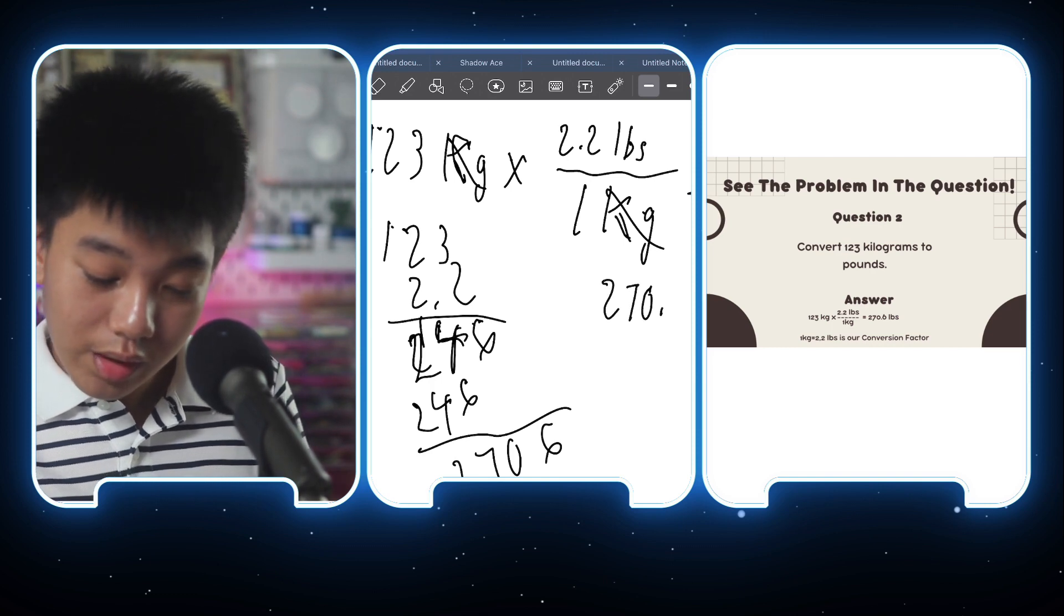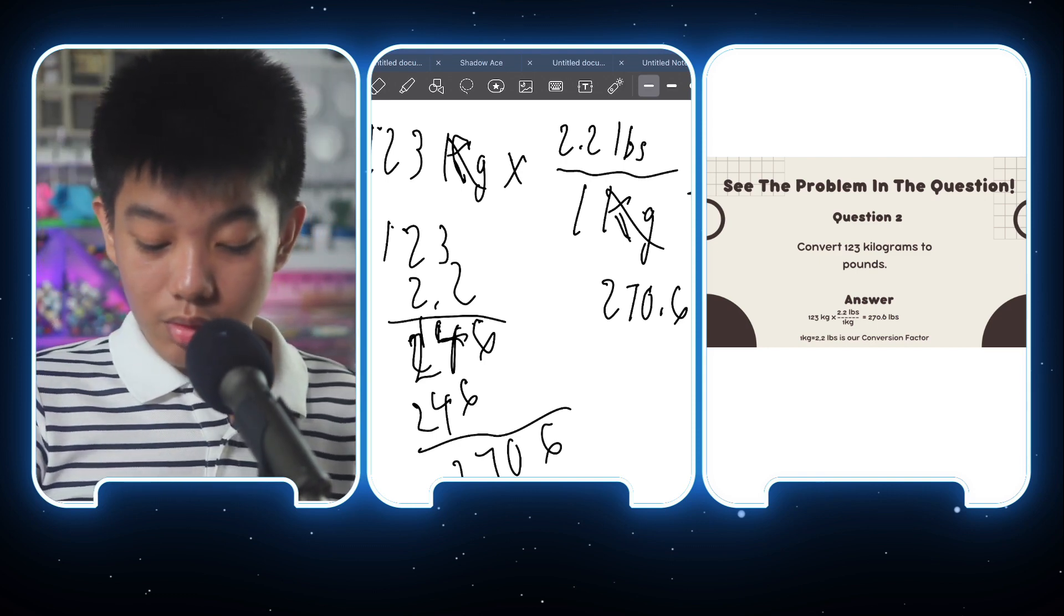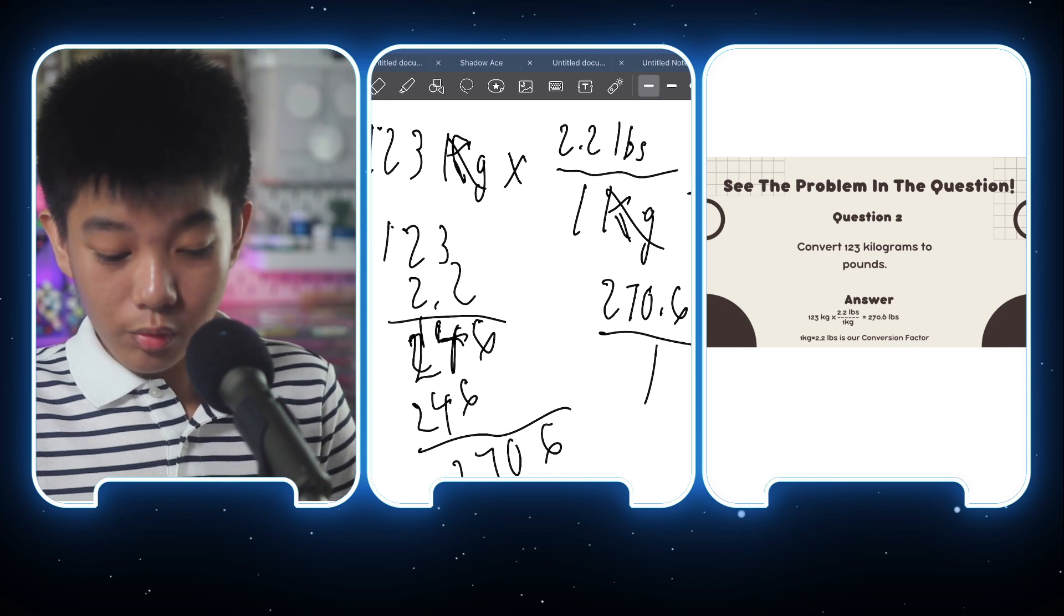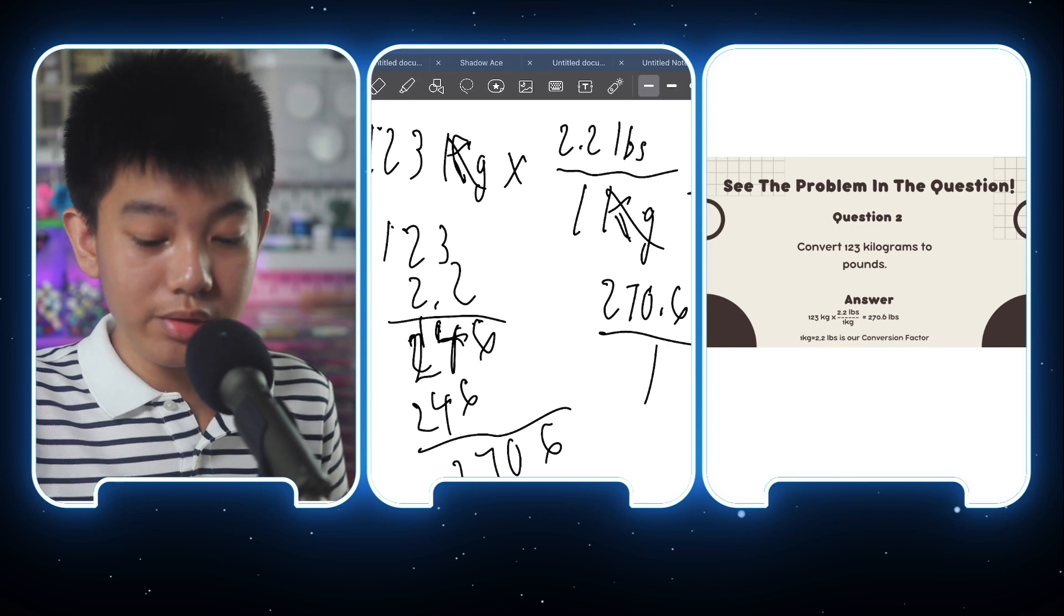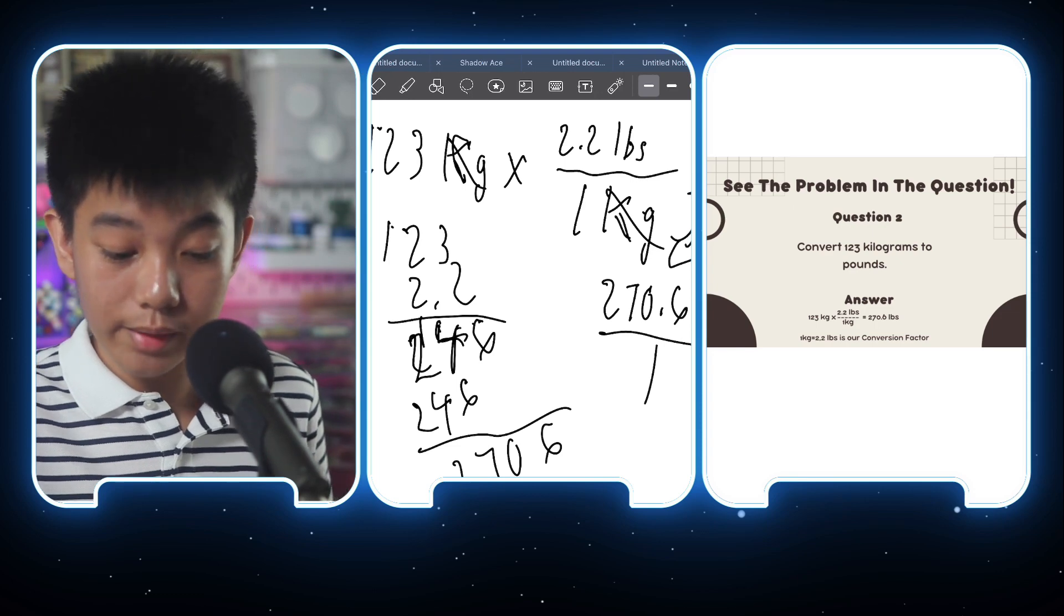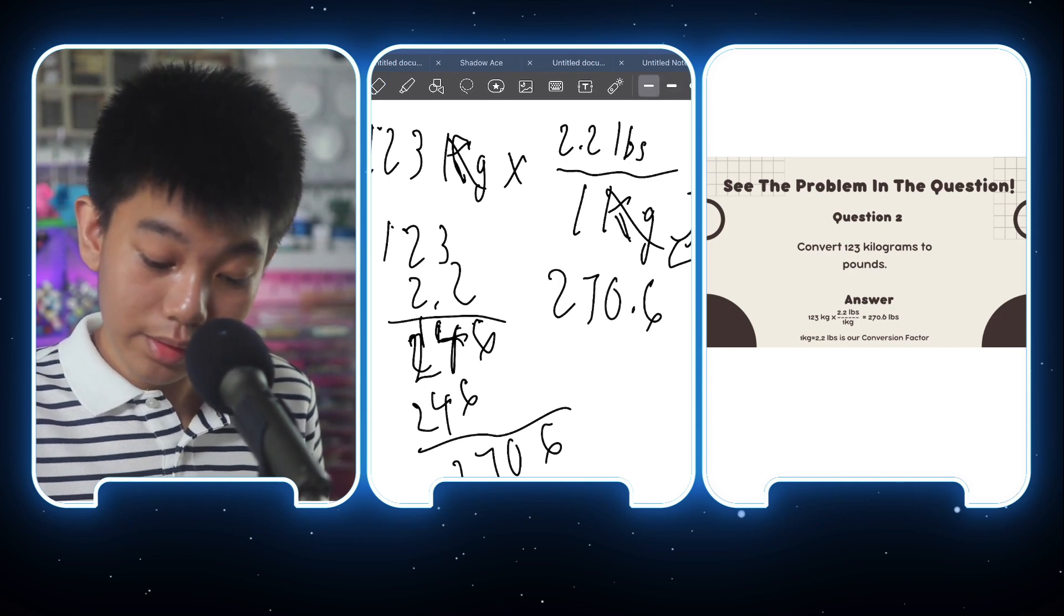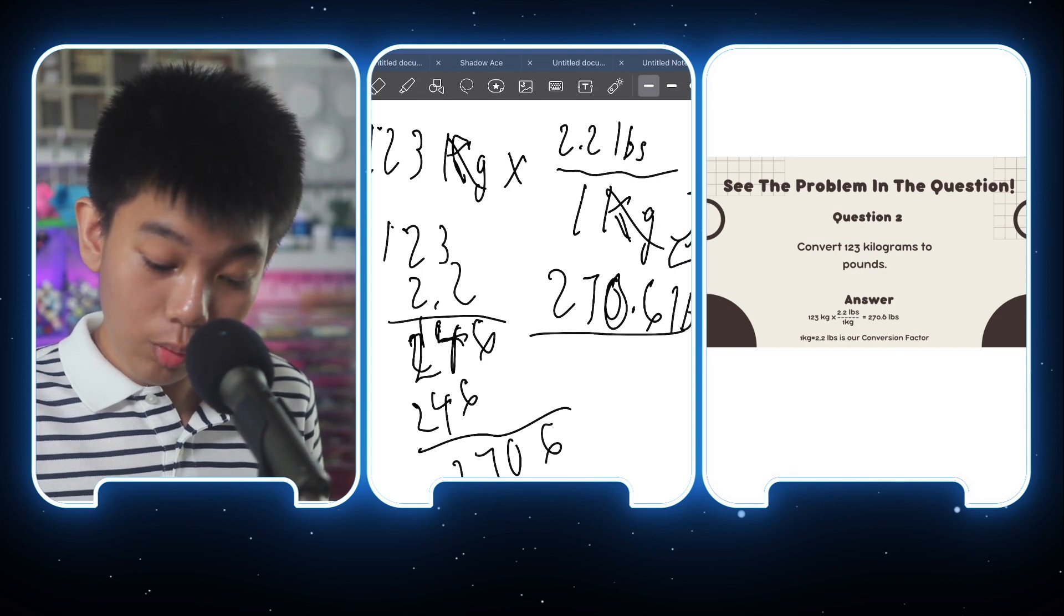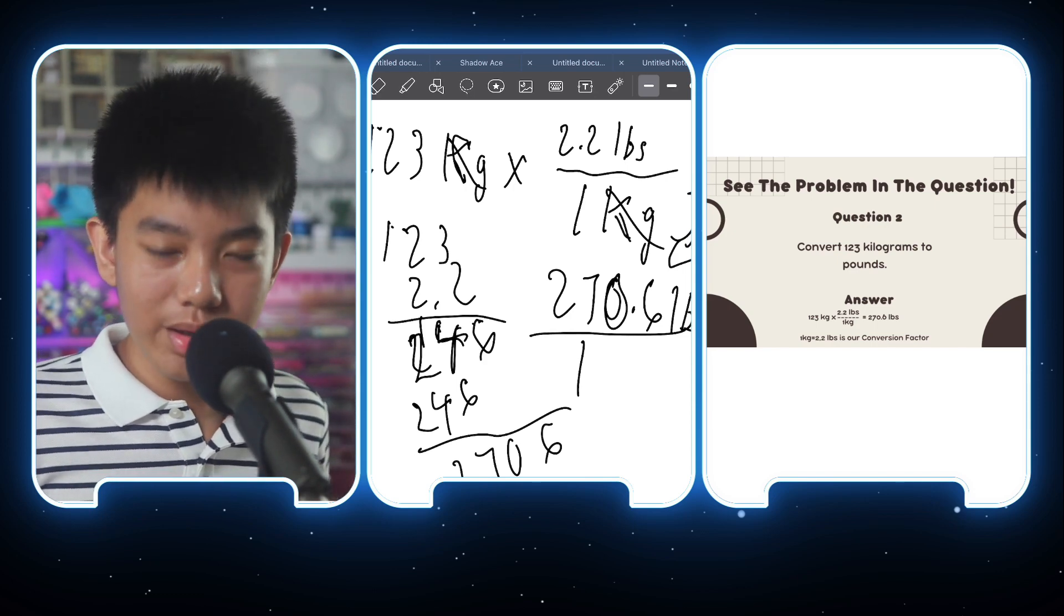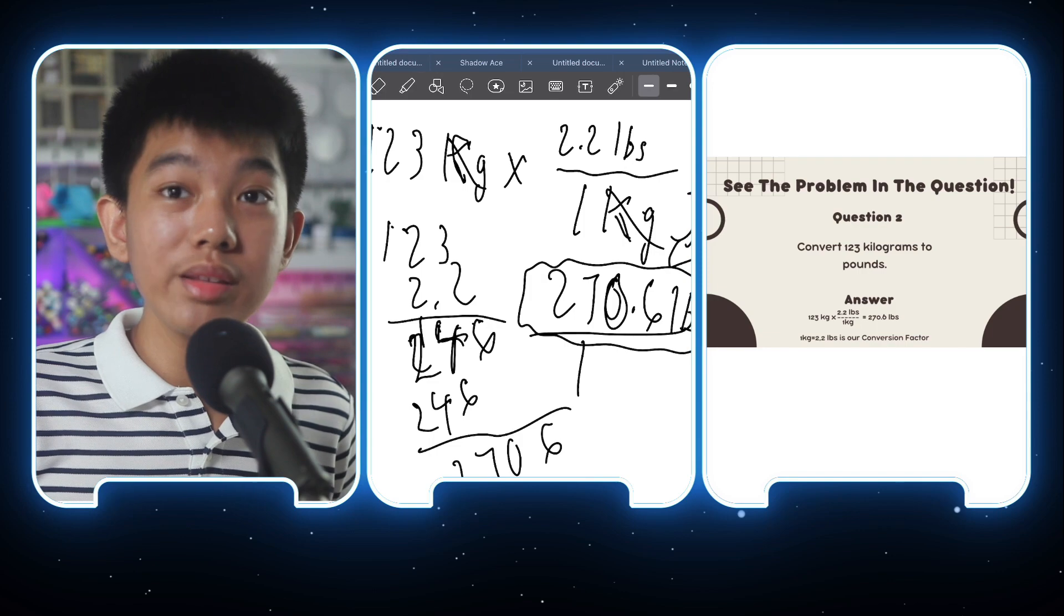270.6 pounds over one. So when you multiply 123 by the 2.2, this equals 270.6 pounds over one. And we won't need to divide 270.6 by one, because any number divided by one is itself. So this is our answer, 270.6 pounds. And with that, that's math.